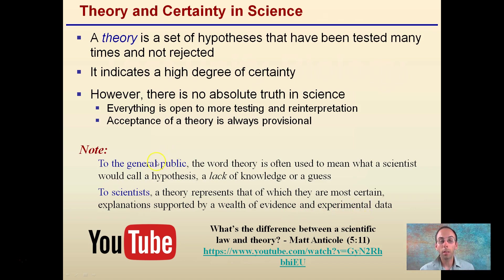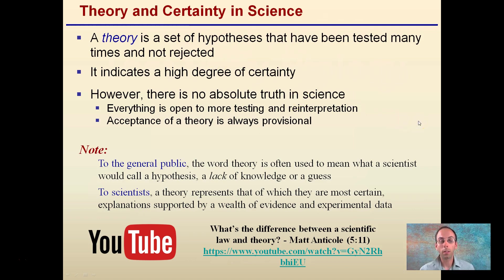When we use the word theory, the general public has a slightly different interpretation than a scientist would. We want to be careful when we look at theories such as cell theory — the general public typically defines a theory more like what a scientist would call a hypothesis, something with a lack of knowledge or a guess. To a scientist, though, these are the most certain explanations — about 99% certain — because of the high degree of certainty from all the tests done with no rejections. There's also a link to a YouTube video if you want to see the difference between a scientific law and a theory.